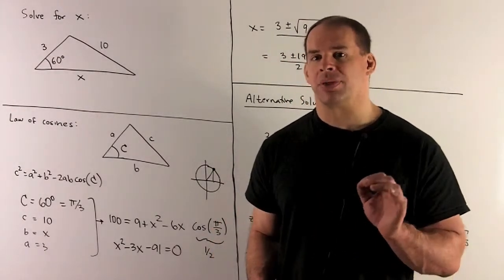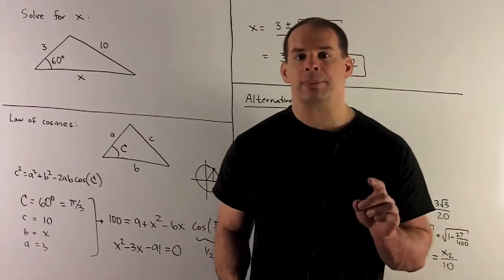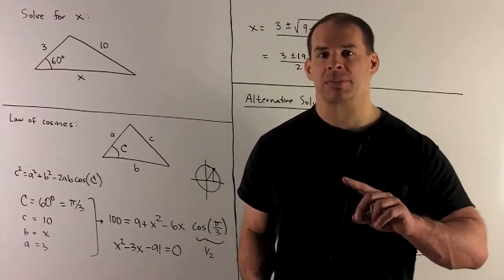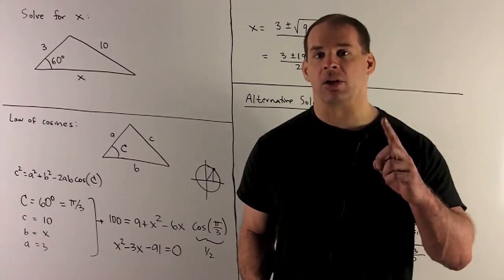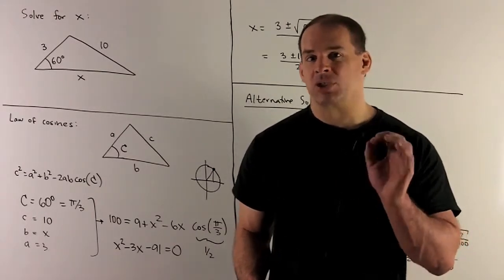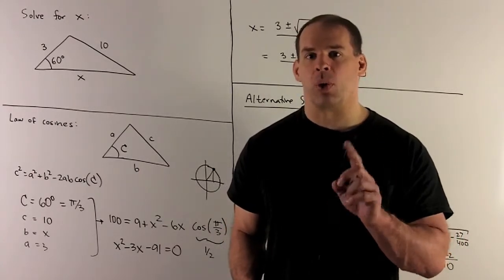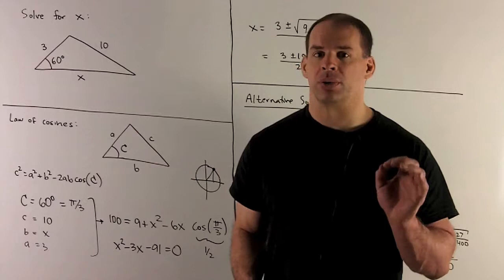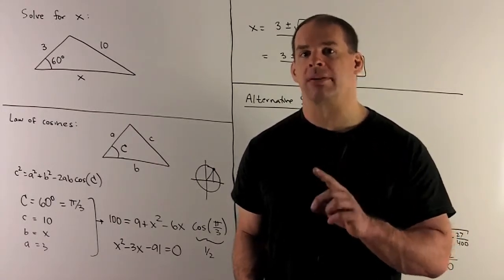Cosine of pi thirds is going to be 1 half. The way I remember that: comparing pi thirds versus pi sixths, pi thirds is the higher angle, so it has a smaller cosine. Your choices are either 1 half or square root of 3 over 2. Square root of 3 over 2 is about 0.87, so we go with 1 half.